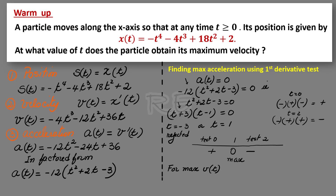Now, for the maximum velocity, remember that acceleration is the slope of the velocity function. Since a of 1 is equal to 0 and t equal to 1 is a maximum of the acceleration, therefore at t equal to 1 we will get a maximum velocity.